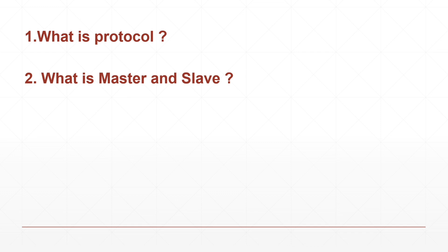Master means whoever can initiate something, and slave means whoever follows the master. It's just like a teacher and student — the teacher gives a command and the student follows. So master is who initiates something like a transmission between two devices, and slave is who follows that command.